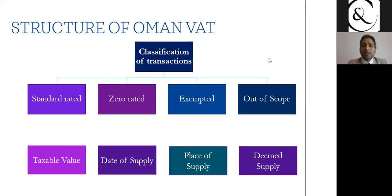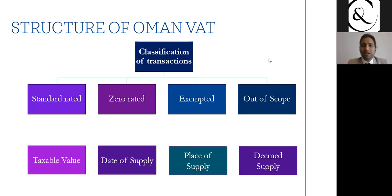Any transaction which you are recording in your books of accounts has to be classified in any of four categories — it cannot be beyond this. Any transaction you are entering into will either be standard rated, zero rated, exempted, or out of scope.